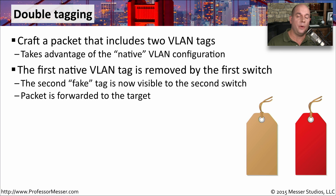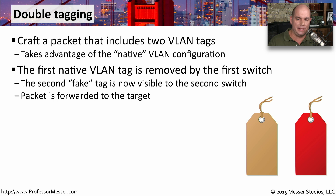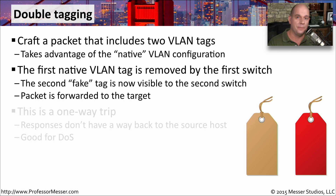To perform this double tagging, you have to hop through multiple switches — that's where those tags are being removed. The first switch will remove the native tag, and within that frame there will be a second tag already inside of it. This is not something that's commonly done. The second fake tag is seen by the second switch down the line, which then forwards that message to the appropriate VLAN. You are now able to send traffic to a different VLAN that was never originally assigned to you.